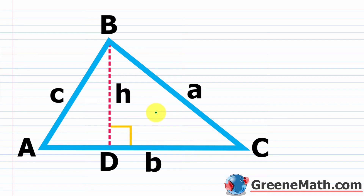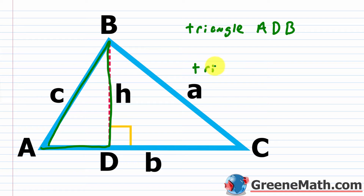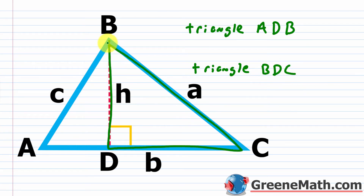Because we have an oblique triangle, we're going to split triangle ABC up into two different right triangles. You see there's a perpendicular drawn here, labeled H for the height. We form triangle ADB and triangle BDC — so you can see the two right triangles inside the original triangle.